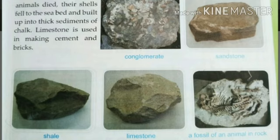Conglomerate is a solid mass of pebbles cemented together by minerals. It is used to polish ornaments and also as a decorative rock. It is mostly grey or orange in colour.